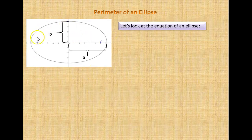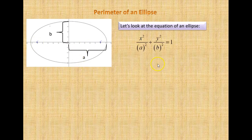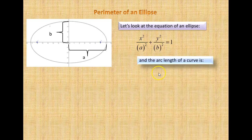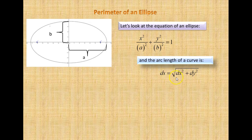We have an ellipse here, with the semi-major axis A and the semi-minor axis B, and the foci located on both halves of the ellipse. Here is the equation of the ellipse: x squared divided by a squared plus y squared divided by b squared is equal to 1. The arc length of the curve is ds, equal to the small change in distance, equal to the square root of dx squared plus dy squared.